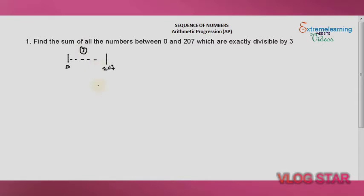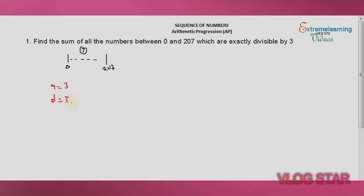There are some easy tricks for this kind of question. Once you are given numbers that are exactly divisible by three, the first term is always three, and since the next numbers are six, nine, and so on, the common difference is also three. So your 'a' is three and your 'd' is three. If instead the divisor were four, then 'a' would be four and 'd' would be four — that's the simple trick.